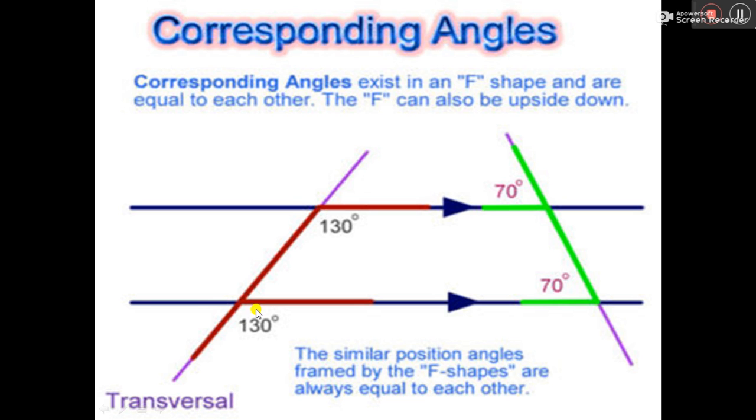So if you take this, you see an F shape. A corresponding angle forms an F shape. Can you see this? It could be facing upwards or facing downwards. You can go upside down also, just like you can see this F with the green sign and this with the red color. So 130—if this angle here is 130 degrees, the angle down here will also be 130 degrees. And this other part at the top, 70 degrees—this angle also will be 70 degrees.